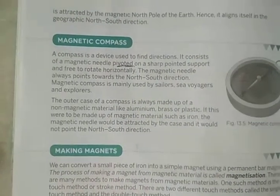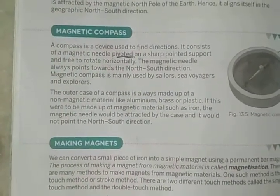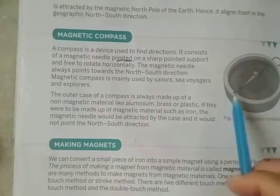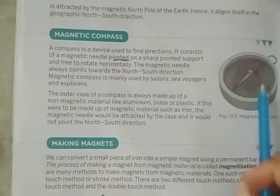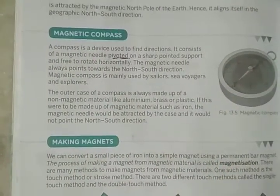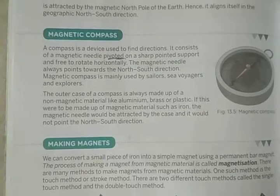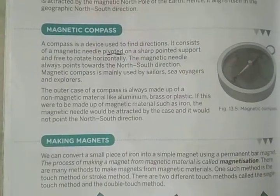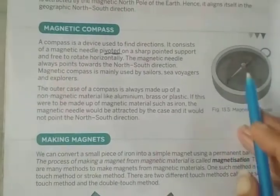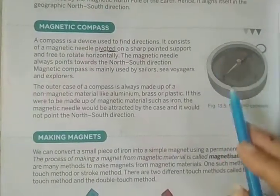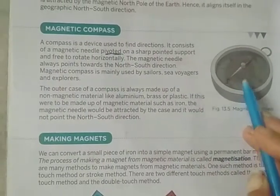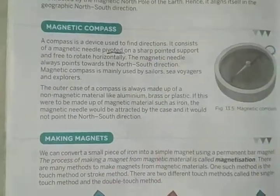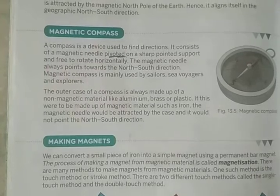The compass looks like the dial of a wristwatch. Just as the wristwatch tells us the time, the needle of the compass tells us the direction. This helps us find out the direction.